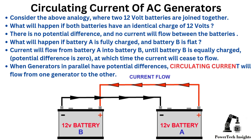Circulating current of AC generators. Consider the analogy where two 12-volt batteries are joined together. If both batteries have an identical charge of 12 volts, there is no potential difference and no current will flow between them. If battery A is fully charged and battery B is flat, current will flow from battery A into battery B until battery B is equally charged and the potential difference is zero. Similarly, when generators in parallel have potential differences, circulating current will flow from one generator to the other.